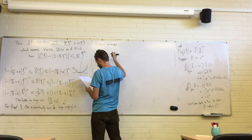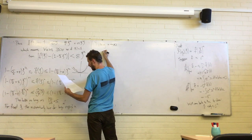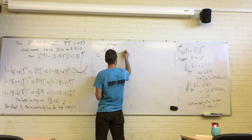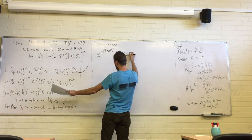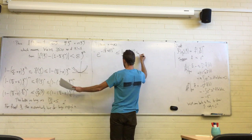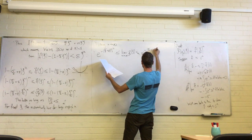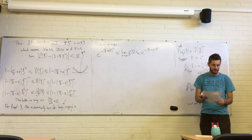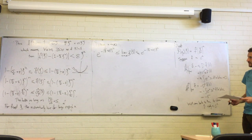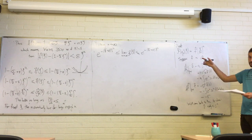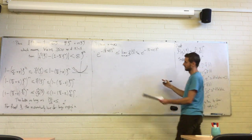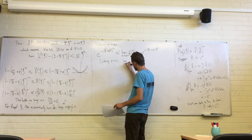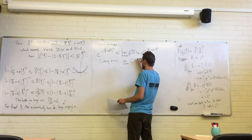Taking n to infinity, what do you get? You get e^(-(sigma²/2 + epsilon)·xi²) as the limit of gn-hat(xi), and the exponential on the other side. Since this was true for every epsilon, and delta no longer appears, we can take epsilon to zero. That gives exactly the pointwise limit of these Fourier transforms.